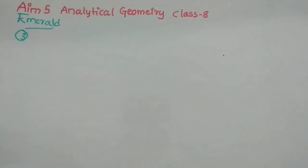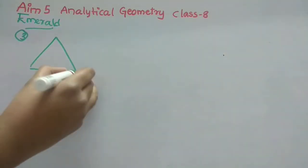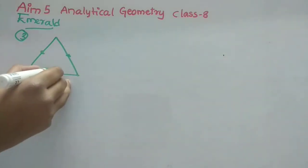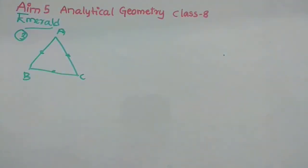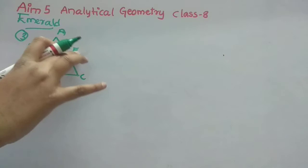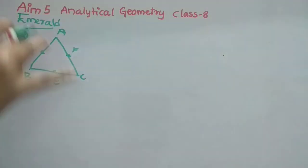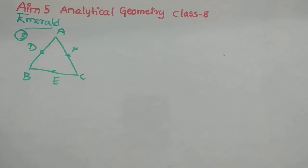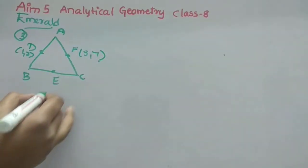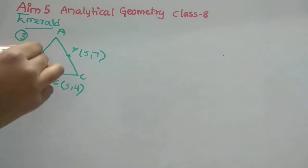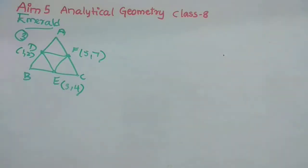Third Emerald question: we are given the midpoints of the sides of triangle ABC — naming them D, E, F. The given midpoints are D(1,2), F(5,7), and E(3,4). We join them to form an inner triangle DEF.